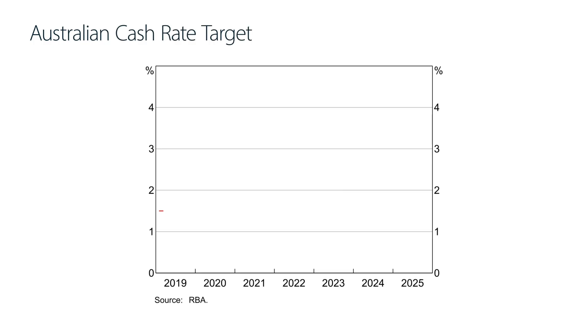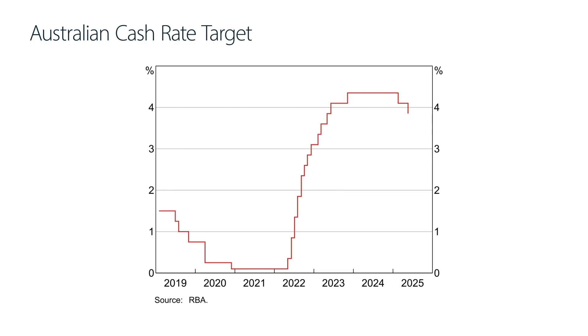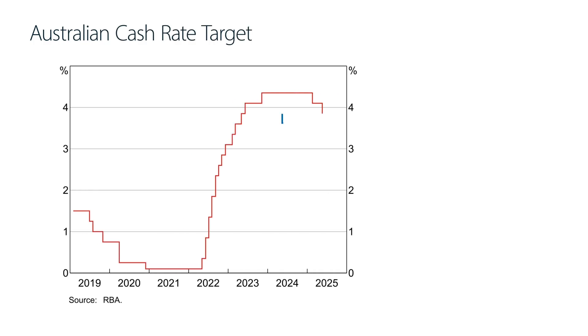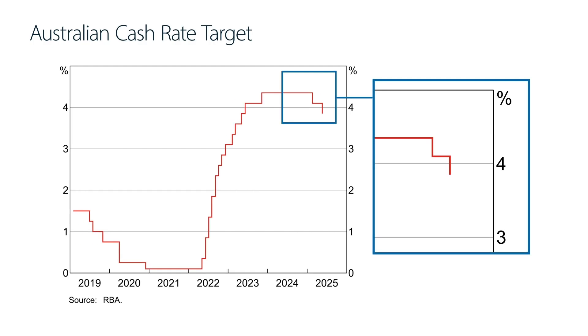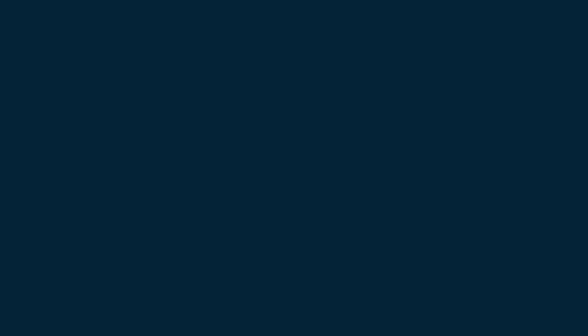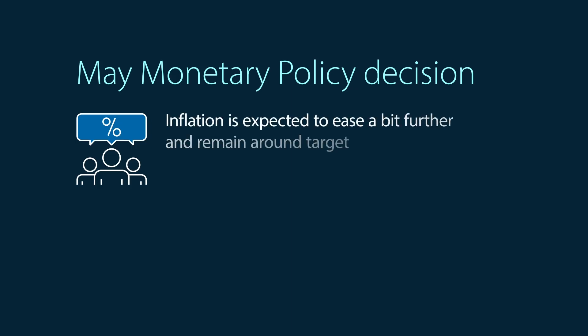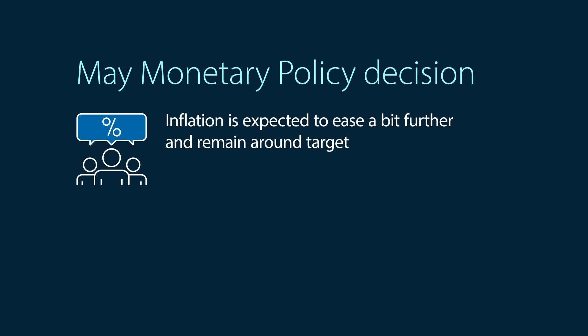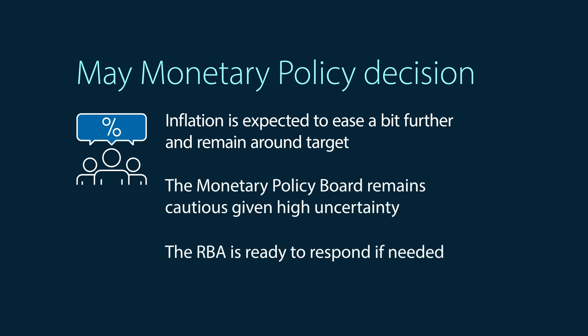With all that in mind, the RBA's Monetary Policy Board decided to lower the cash rate to 3.85% at its May meeting. The Board decided it was appropriate to lower the cash rate because inflation is expected to ease a bit further and remain around the middle of the target. However, the Board remains cautious, given uncertainty is high, and is ready to respond if needed.